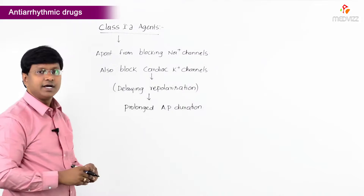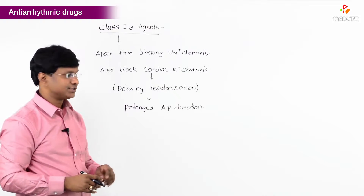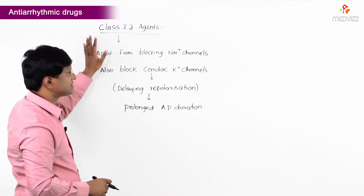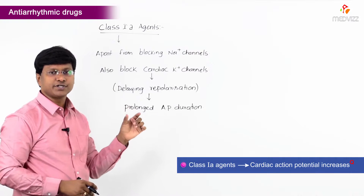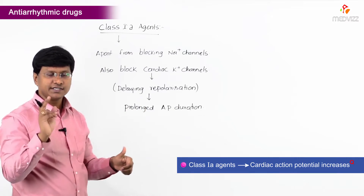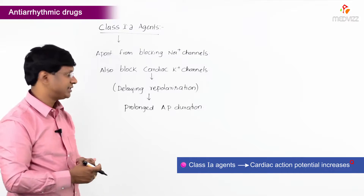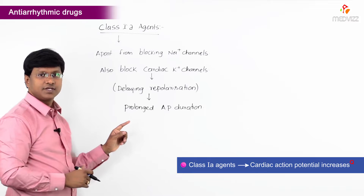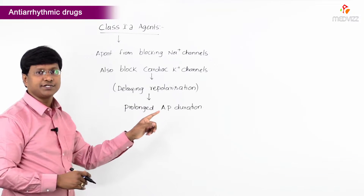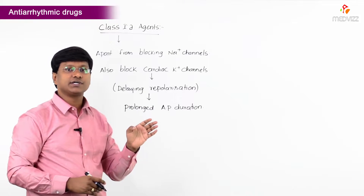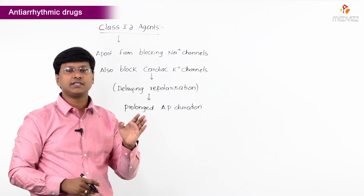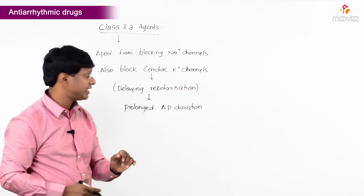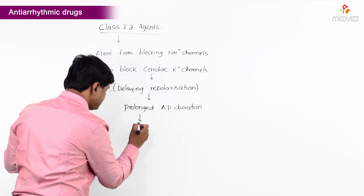Once repolarization is delayed, there will be a prolonged action potential duration. So with Class 1A agents, the cardiac action potential duration increases — this is a very important multiple choice question point.